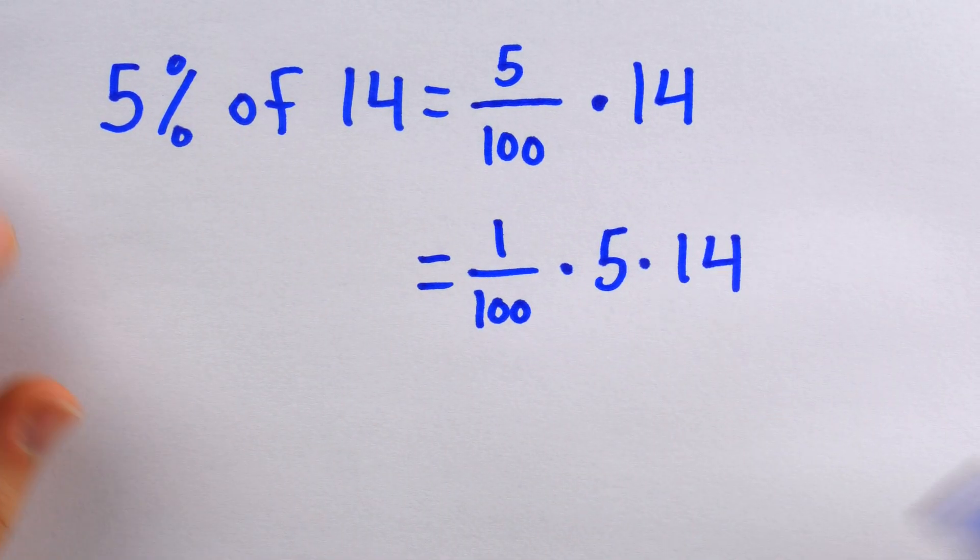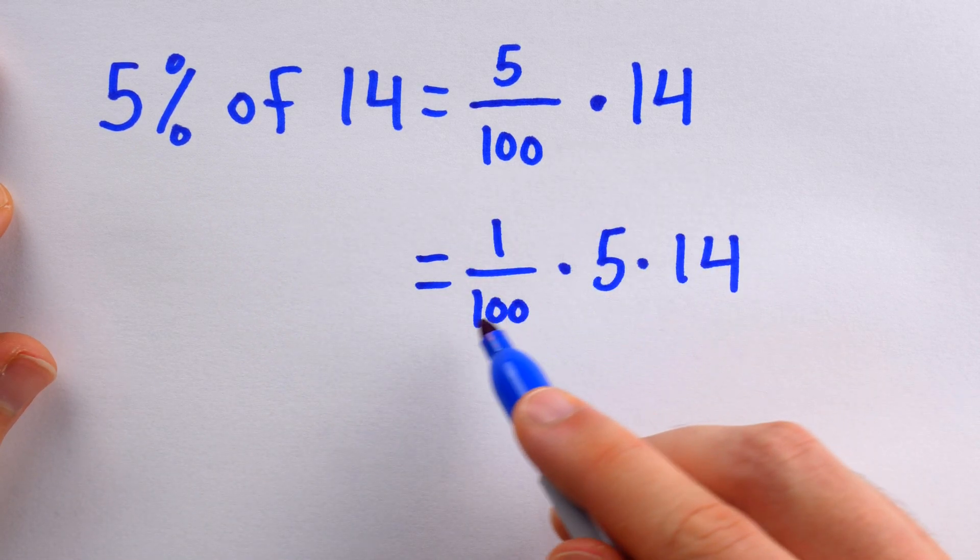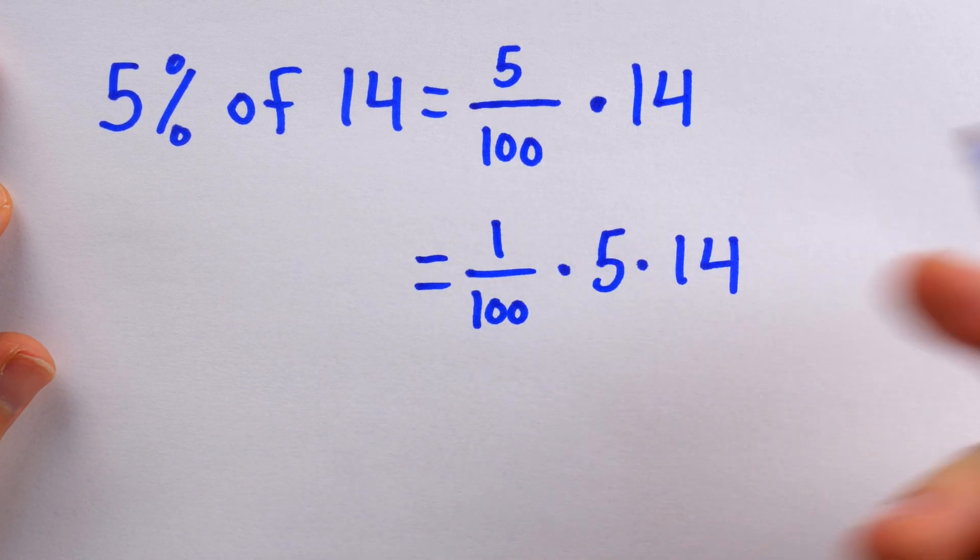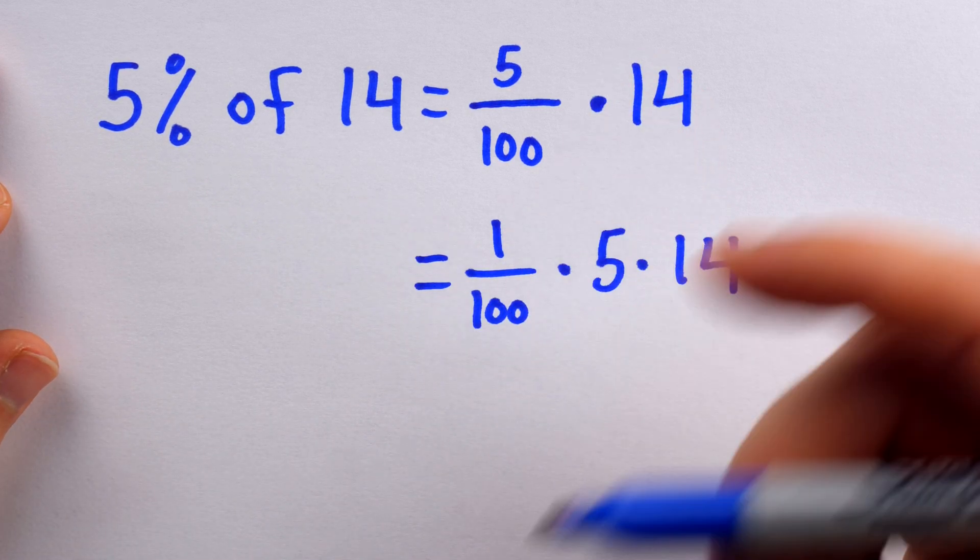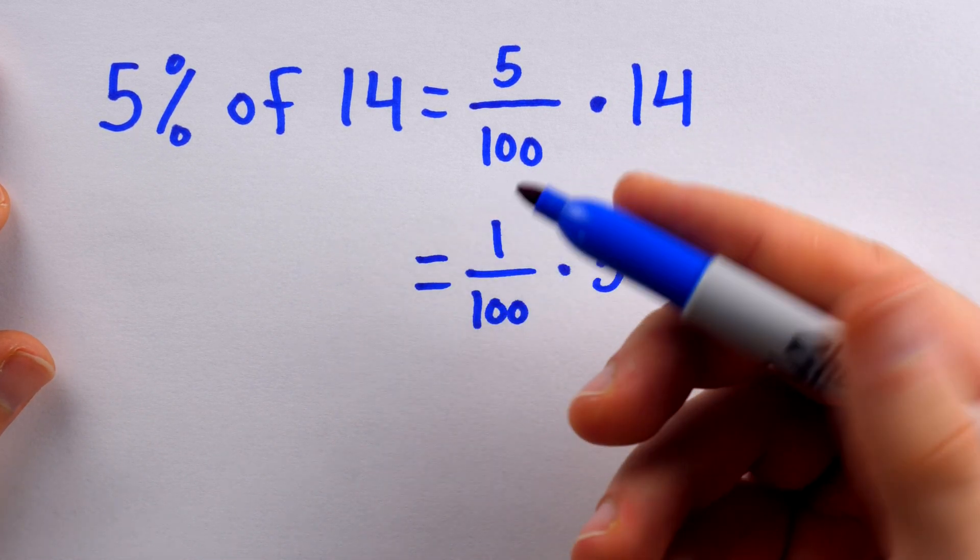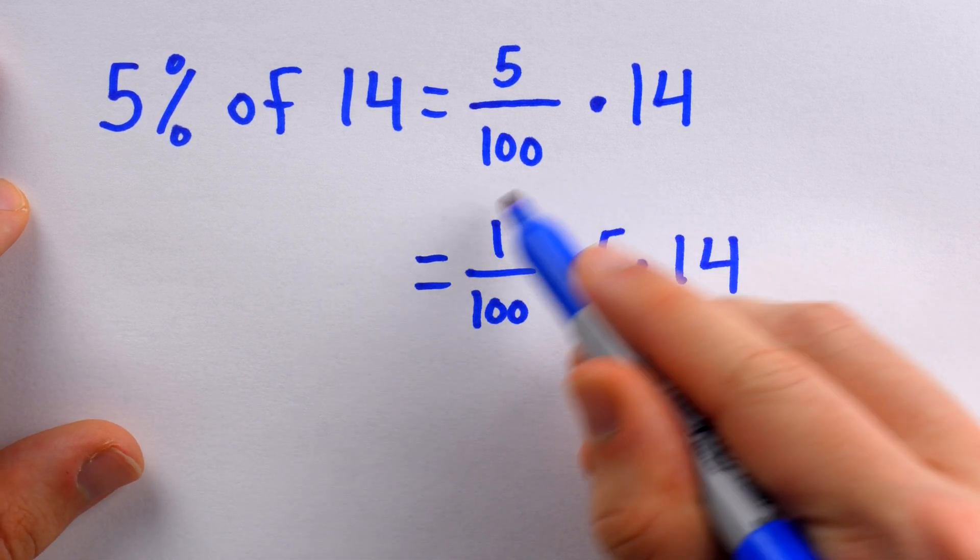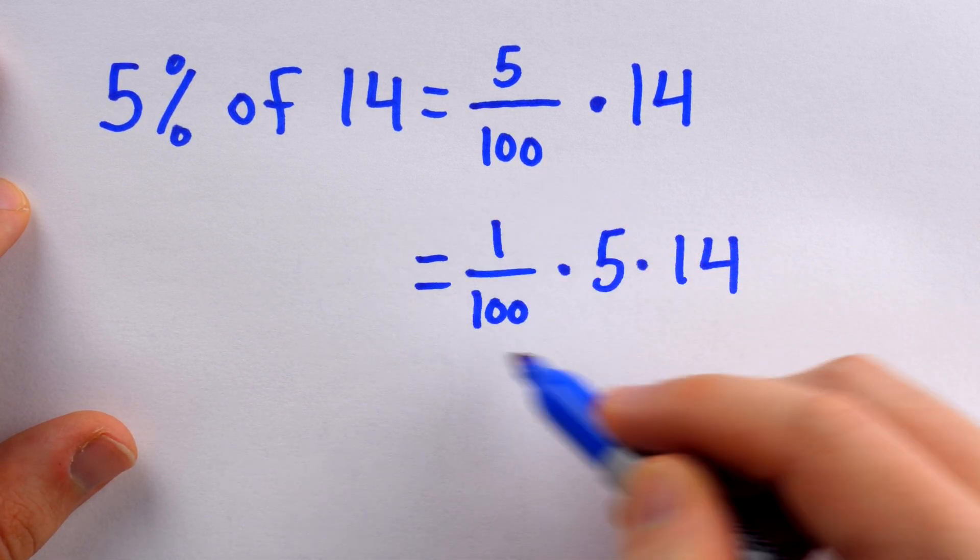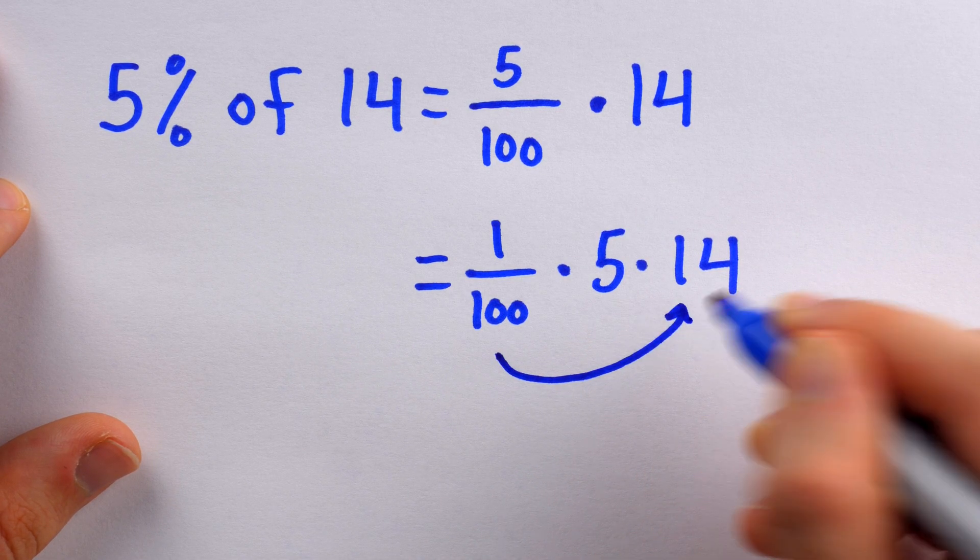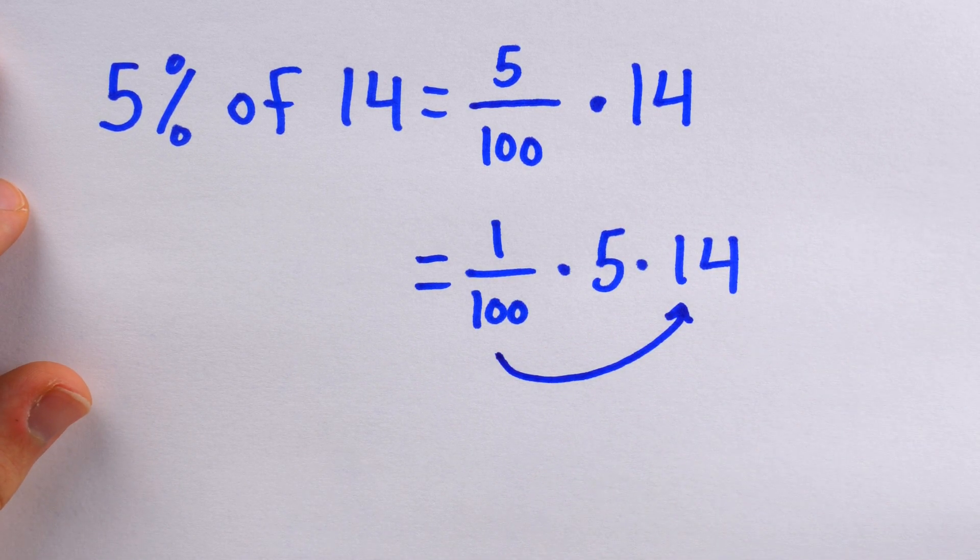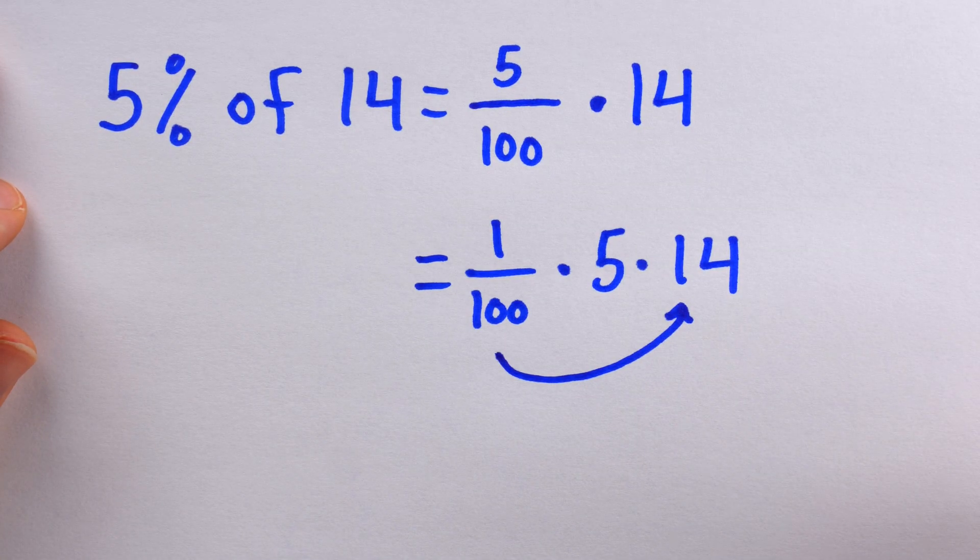Something called the associative property of multiplication is also at play here, otherwise this multiplication of three numbers would not make any sense. But more importantly is the commutative property of multiplication, which tells us that the order of multiplication doesn't matter. So we could have 5%, like we see here, 5 over 100, or we could move the 1 over 100 next to the 14, and thus look at 14% of 5. Either way, you would get the same number.